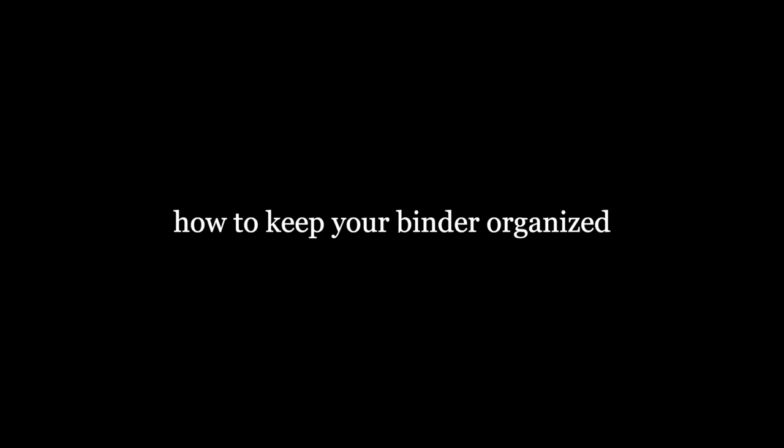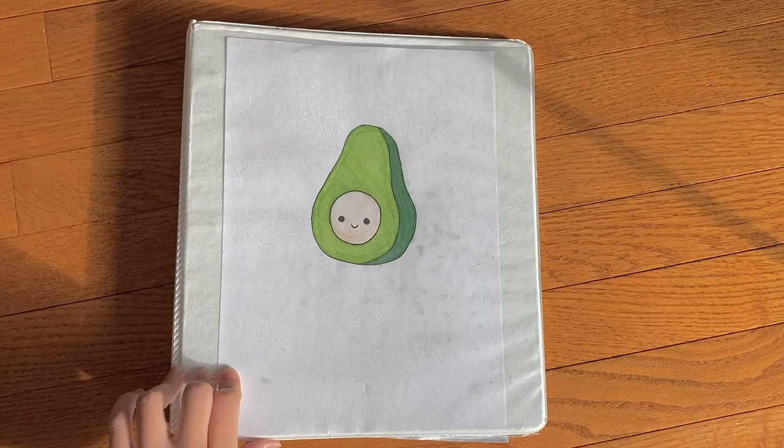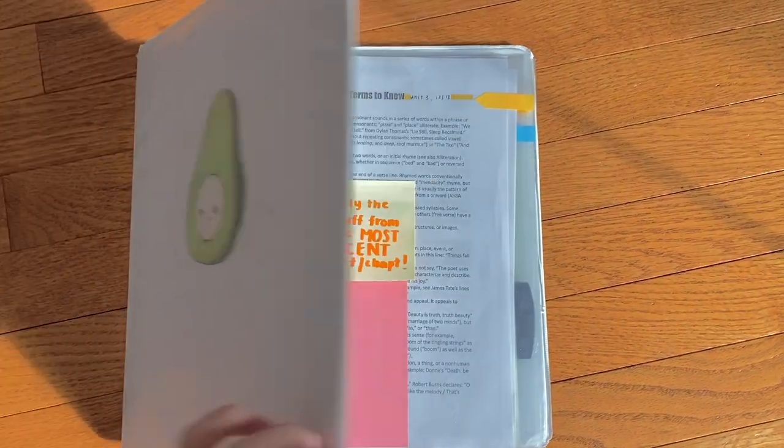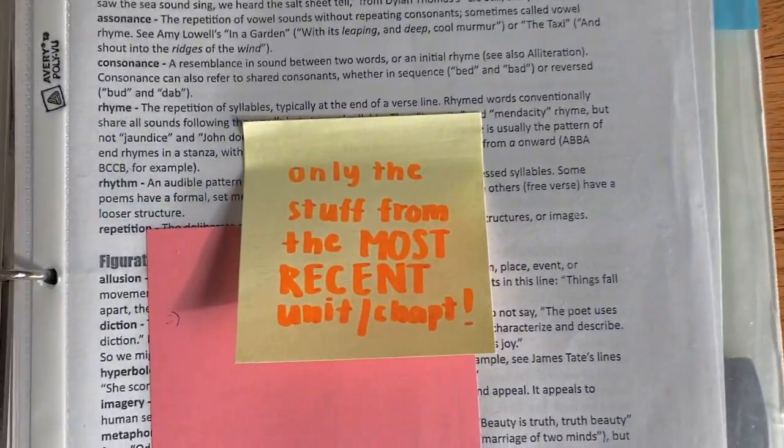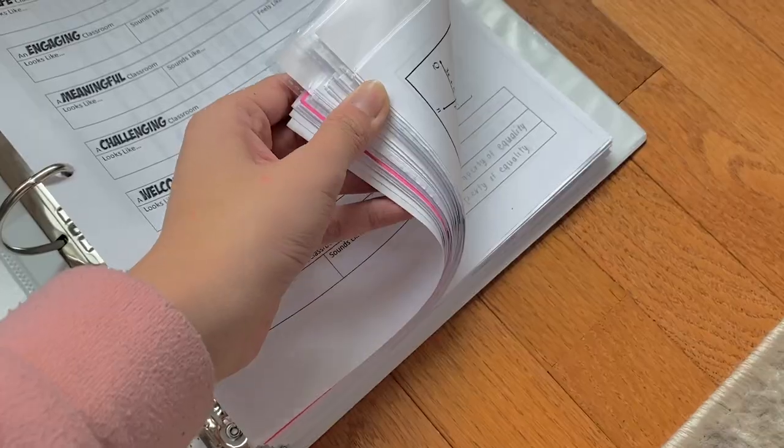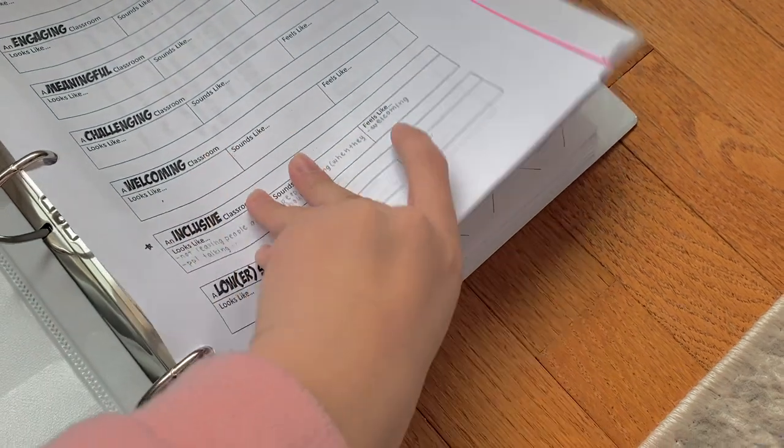Next, I'll share a few tips for how you can keep your binder organized. A way to keep your binder organized is to only keep the stuff for the current or most recent unit or chapter inside. This way, you won't be bothered by past notes that won't really contribute to what you're learning.